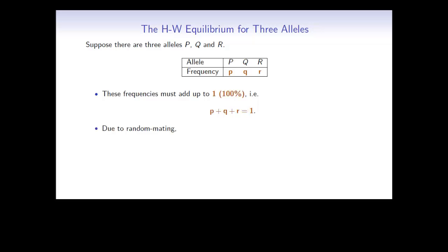Also, due to random mating, because you get one allele from your mother and one from your father, it has to be true that p plus q plus r squared must equal 1, or 100%.